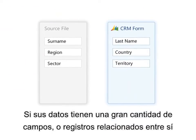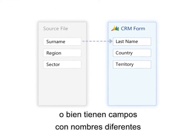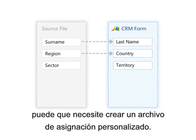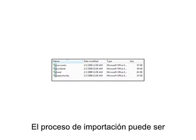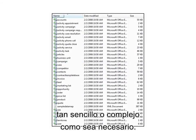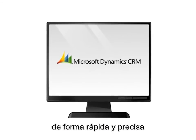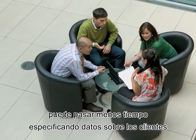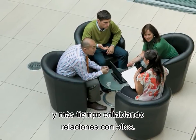If your data has a large number of fields, or records that relate to each other, or has fields with different names than the forms in CRM, you may need to create a custom mapping file. The import process can be as simple or as complex as you need. By moving your data into Microsoft Dynamics CRM quickly and accurately, you can spend less time entering data about your customers and more time building relationships with them.